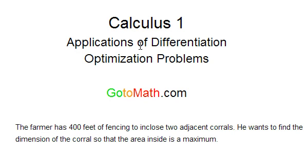In this section, we are still talking about optimization problems. We've got a farmer who's got 400 feet of fencing to enclose two adjacent corrals. He wants to find the dimension of the corral so that the area inside is a maximum. This is kind of a typical optimization problem that you'll find in an engineering calculus class or in just a survey calculus class.